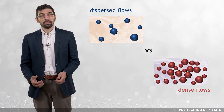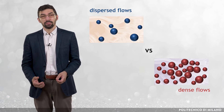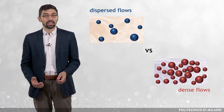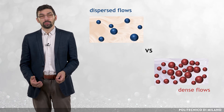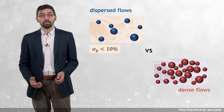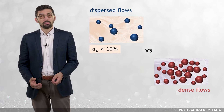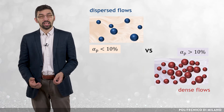There is no parameter which clearly establishes a threshold between dispersed and dense flows. As a vast indication, dispersed flows are characterized by low particle volume fraction, say below 10%. Particle-laden flows with concentration higher than 10% usually behave as dense.